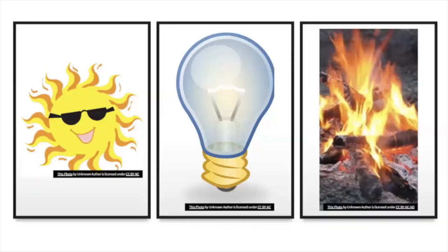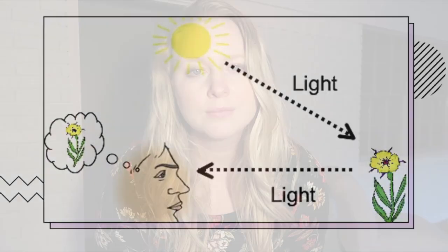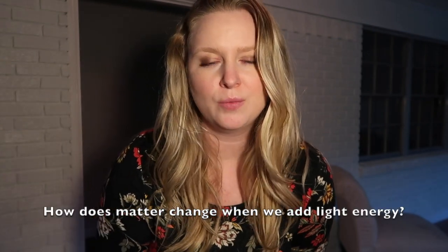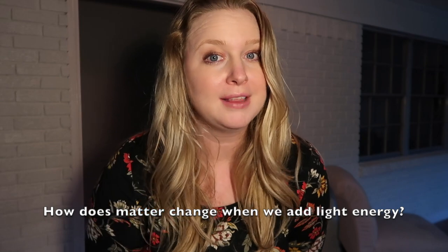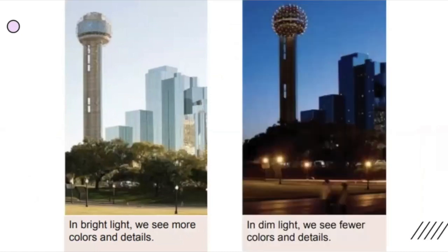Next we're going to talk about light energy. There are many forms of light energy: the sun, fires, light bulbs. The reason we can see matter around us is because of light energy. Light bounces off objects and goes into our eyes. I wonder how does matter change when we add light energy. Remember to write this down in your chart. The more light, the more colors and details we see.